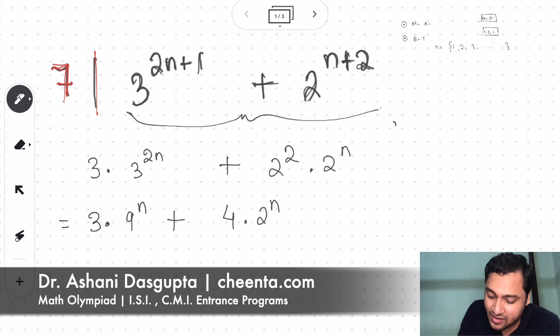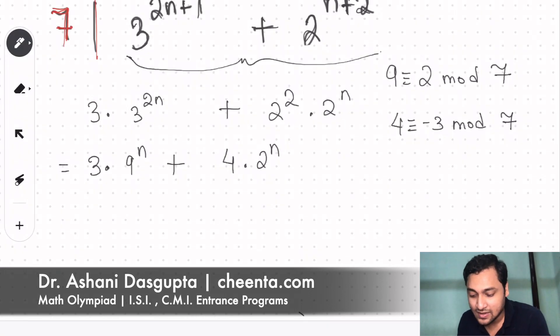So 9 is definitely congruent to 2 mod 7, and 4 is congruent to negative 3 mod 7.